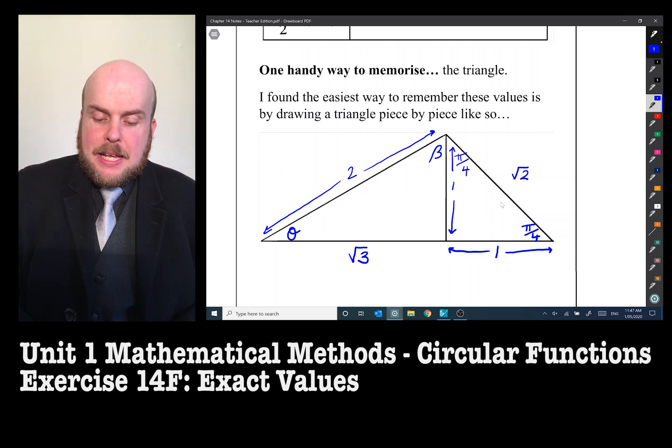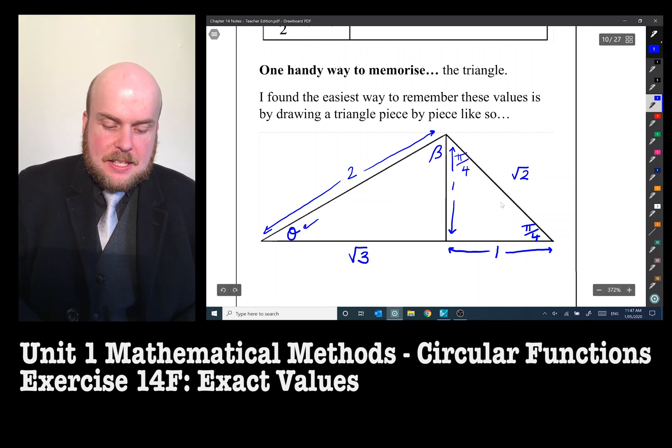So opposite, well, the one is here in the middle, and the hypotenuse is two, one over two. For beta here, that one is an adjacent, so it can't be this one. So therefore that's this angle here.